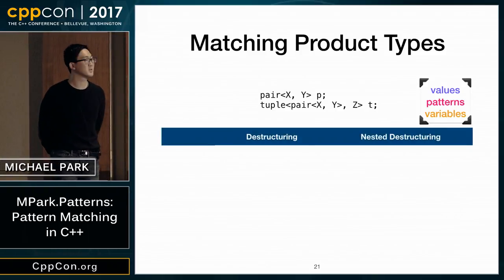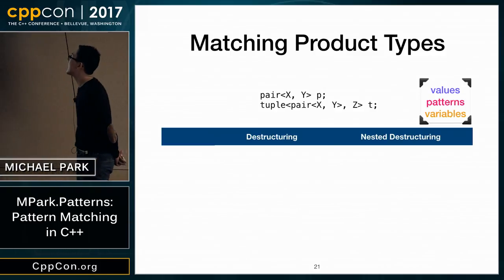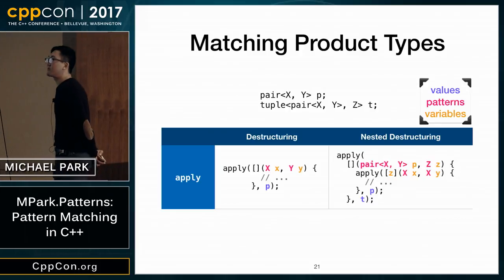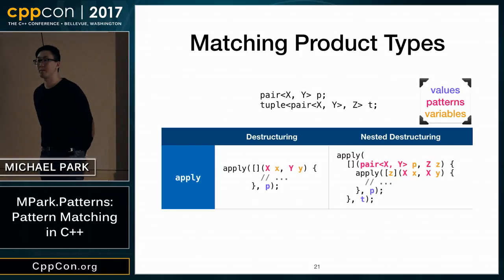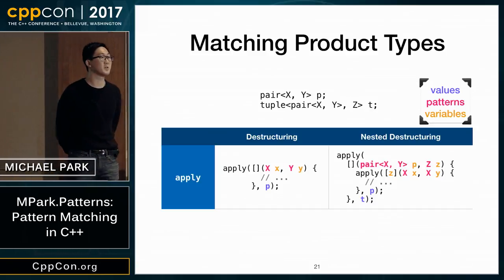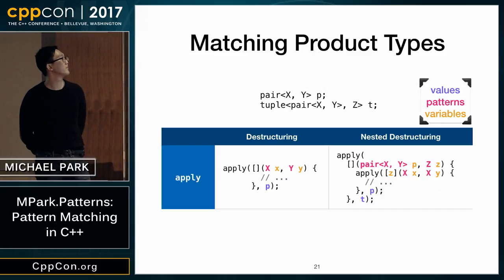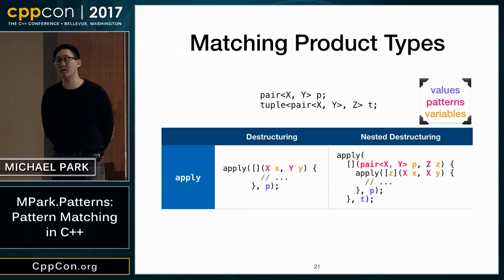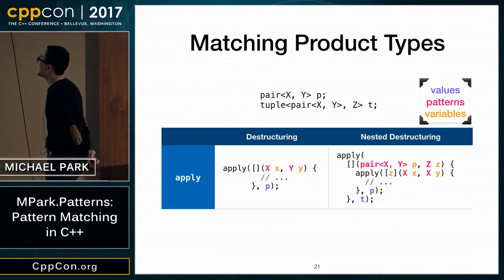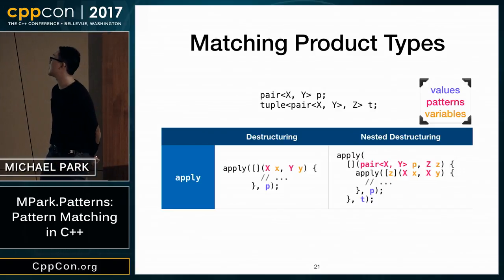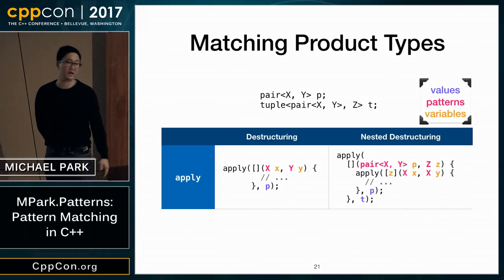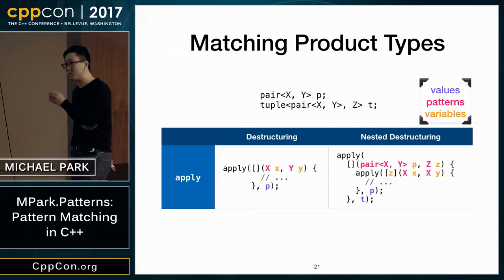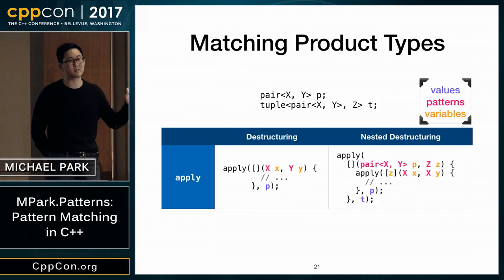To decompose product types: given a pair<X,Y> called p and a tuple<pair<X,Y>, Z>, in C++17 we have std::apply, which allows you to unpack a tuple or pair or any tuple-like type into function arguments. On the right-hand side, nested destructuring with apply gets ugly quickly — you have to apply the first level, then expand again at the second layer, and multiple levels of nesting compound rapidly.